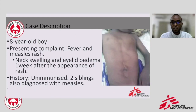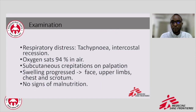We are reporting an eight-year-old boy diagnosed with measles who presented at our hospital with fever, neck swelling, and eyelid edema one week after the appearance of a maculopapular skin rash. The patient had no vaccination history and two of his siblings were diagnosed with measles during his admission. On examination, the patient looked unwell and febrile. Chest examination revealed respiratory distress with a respiratory rate of 65 per minute and intercostal retraction. Bilateral crepitation was detected. Oxygen saturation on room air was 94%. Subcutaneous crepitation on palpation was also detected, and swelling progressively involved the face, eyes, upper limbs, chest, and scrotum. There was no sign of malnutrition.